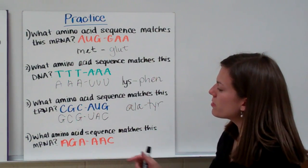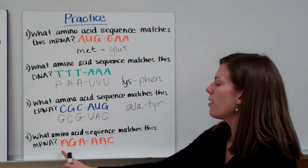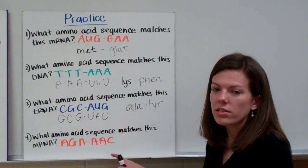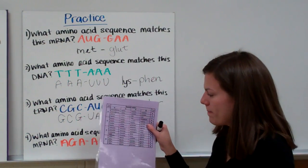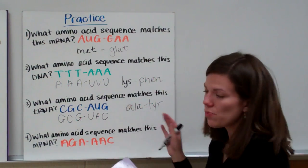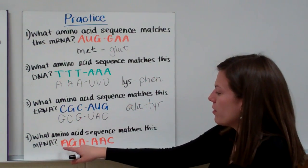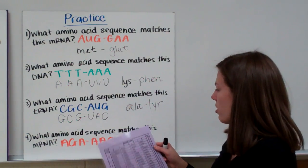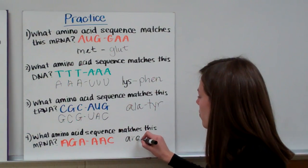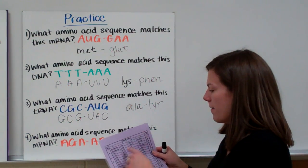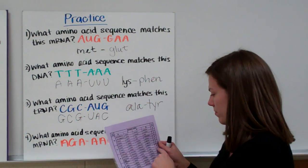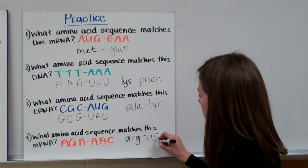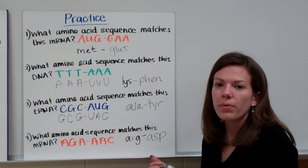And then our last example says what amino acid sequence matches this mRNA? So we have A, G, A, A, A, C. Do we need to change this into something else to use our codon chart? But they gave us mRNA. That's easy. We don't have to change our letters. So our mRNA first three letters are A, G, A. So if we look up A, G, A, that is arginine. And the next three letters are A, A, C. If we line those up, we get asparagine. And that's how you do practice for protein synthesis.